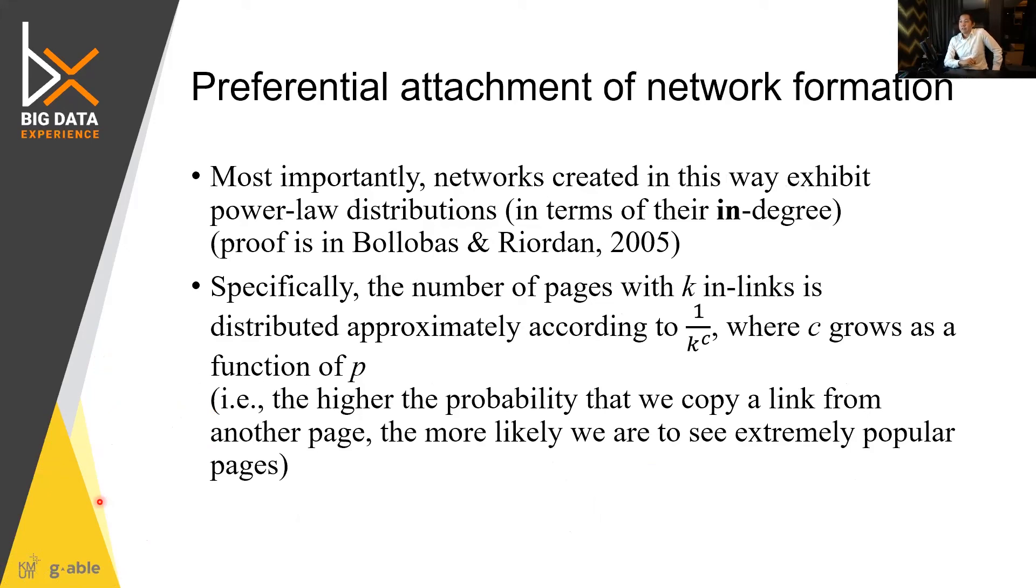Preferential attachment network would create, exhibit this time, they will exhibit the power law distribution. So the specific number of page with K link is similar to this 1 over K to the C.